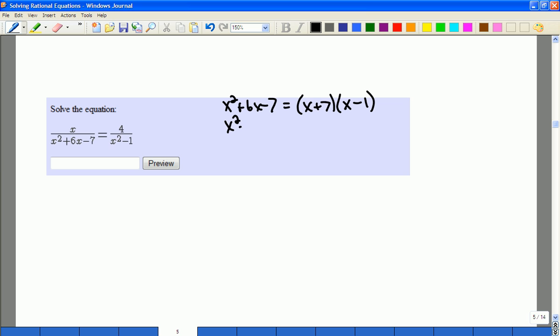And x squared minus 1 is the difference of squares pattern, so x plus 1 times x minus 1 would be the factored form.